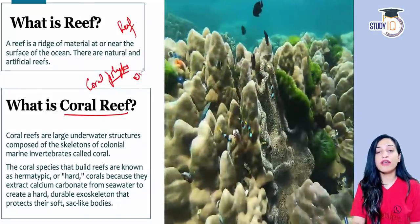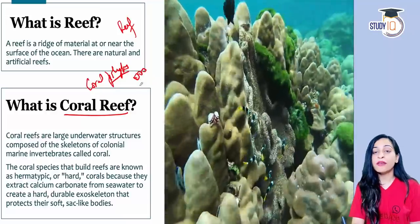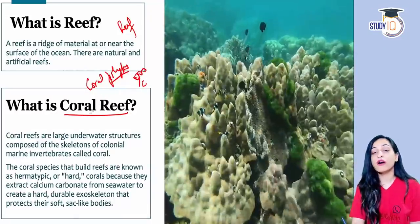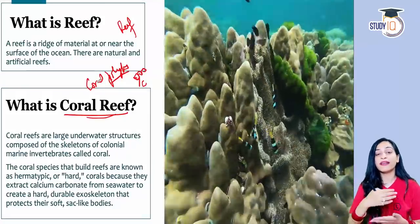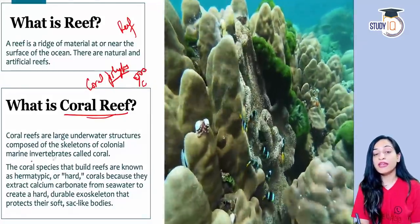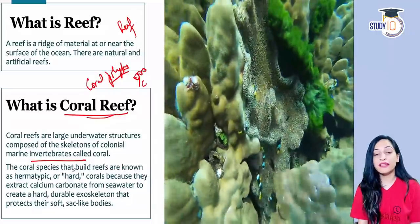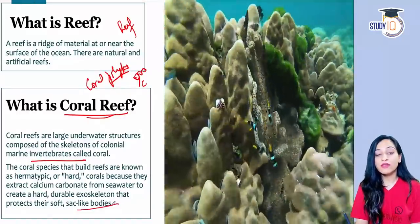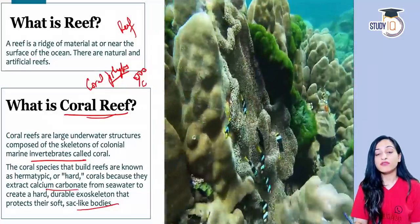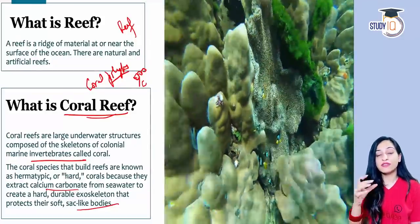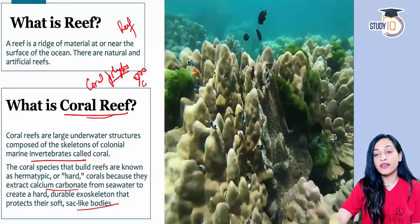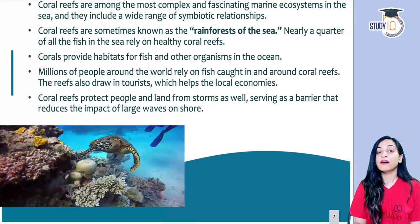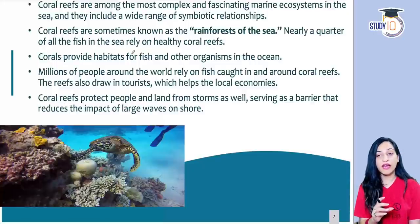Coral polyps exist in many groups which we call colonies. They are composed of calcium carbonate, which we call coral reefs or a barrier. They are marine invertebrates with sac-like bodies. The calcium carbonate is extracted from sea water, and it makes the reef hard, as you can see in the video.